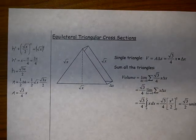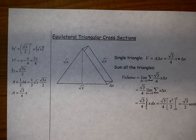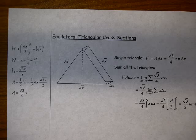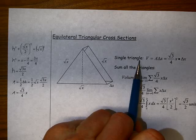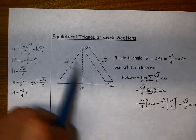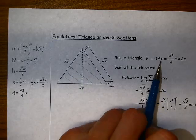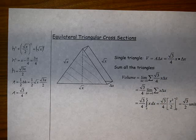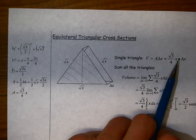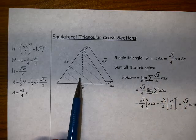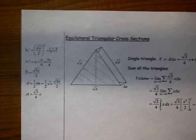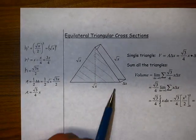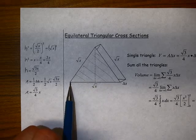Using that exact same base and region R, we could also build up equilateral triangles. So instead of squares standing up out of the page, we're going to have equilateral triangles stacked up. The volume of a single triangle is the area of this face times delta x, and this face has an area of root 3 over 4 times x. All we know is the base is the square root of x, and it's an equilateral triangle.